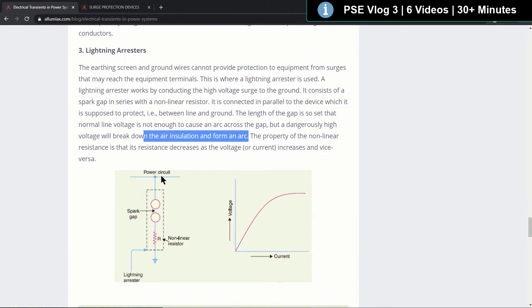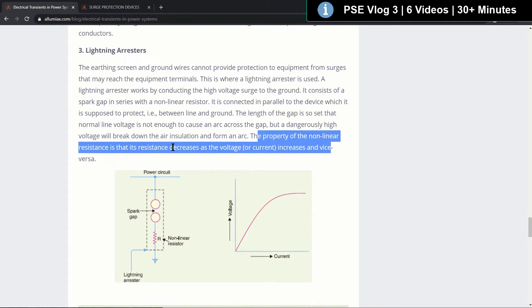So if there's a huge amount of voltage between these two, it'll break down the air insulation here and form an arc across it. And the property of the non-linear resistance is that the resistance decreases as the voltage or current increases and vice versa.